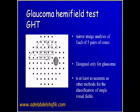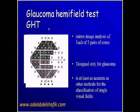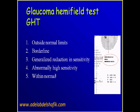In glaucoma, sensitivity may be decreased in one half compared to the other. The upper and lower areas are divided into zones to compare — zone one up compared with zone one down, zone two up with zone two, zone three with three, and so on. You get identical areas up and down and start to compare the values. The result can be: Glaucoma Hemifield Test outside normal, borderline, generalized reduction in sensitivity, abnormal high sensitivity, or within normal.